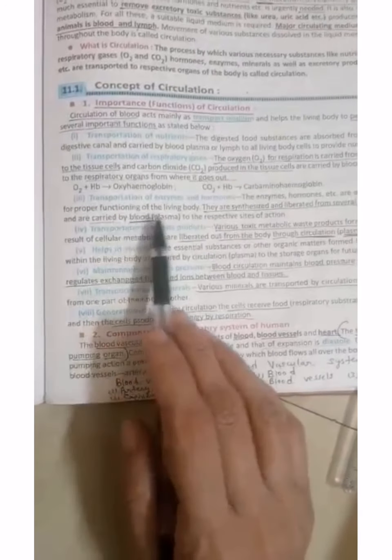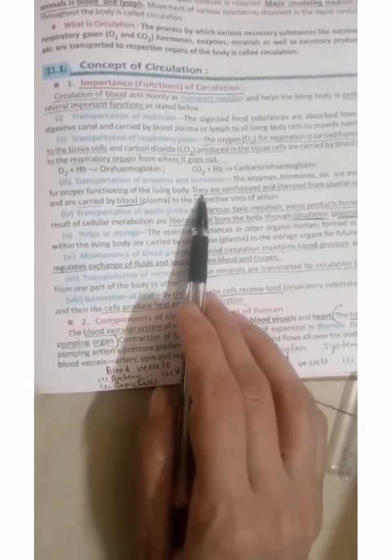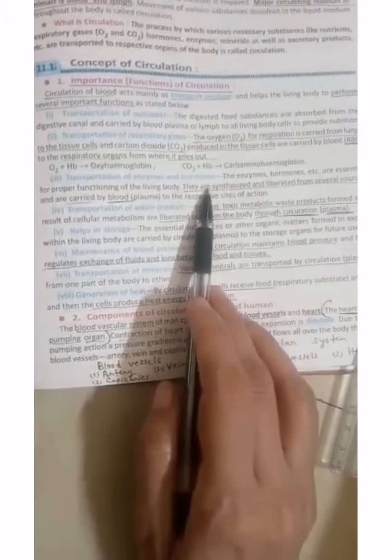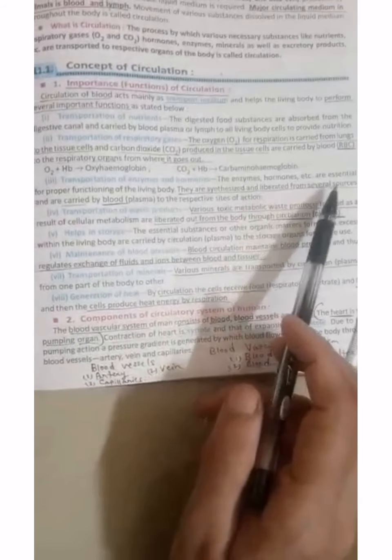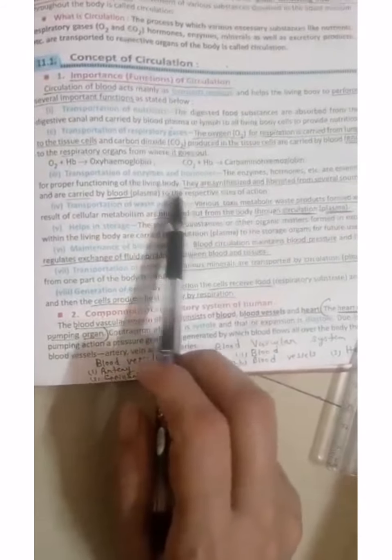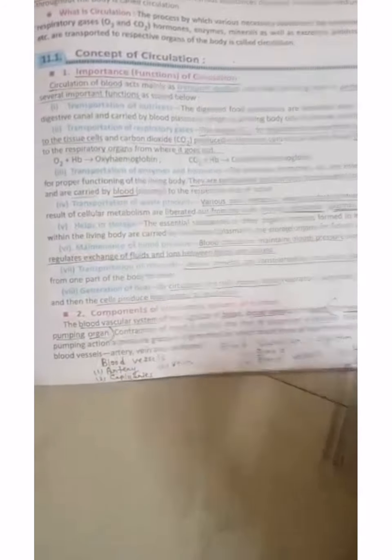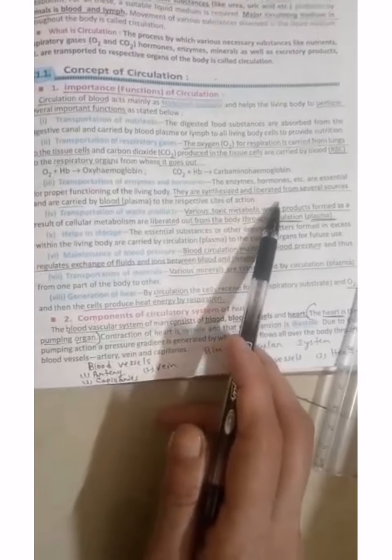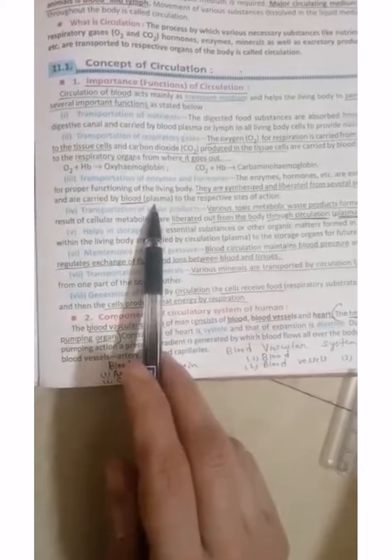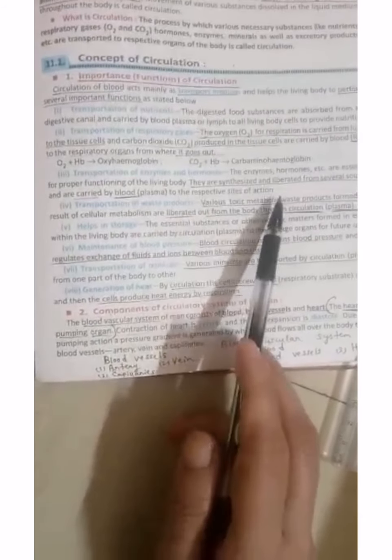Number three is transportation of enzymes and hormones. Enzymes and hormones are essential for proper functioning of the living body. They are synthesized and liberated from several sources and carried with the help of plasma to the respective sites.